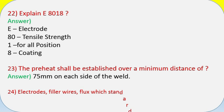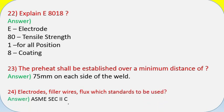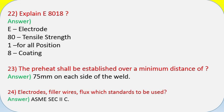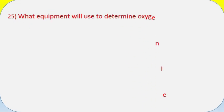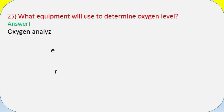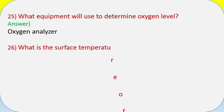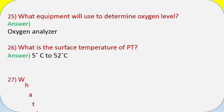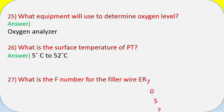Question 24: Electrodes, filler wires, flux — which standards to be used? Answer: ASME Section 2C. Question 25: What equipment is used to determine oxygen level? Answer: Oxygen analyzer. Question 26: What is the surface temperature for PT? Answer: 5°C to 52°C.